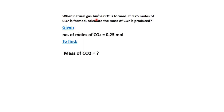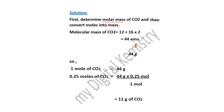Question 2: When natural gas burns, carbon dioxide is formed. If 0.25 moles of carbon dioxide is formed, calculate the mass of carbon dioxide produced. Given: 0.25 moles of carbon dioxide. Find: mass of carbon dioxide produced. Mass of CO2 find out करने के लिए पहले molar mass of carbon dioxide find out करेंगे, फिर moles को mass में convert करेंगे। Carbon dioxide एक molecule है, इसलिए molecular mass find out करना है।